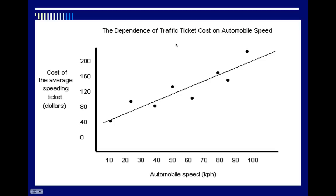Here's an example of a proper title for a graph using independent and dependent variable. So, this one says the dependence of traffic ticket cost on automobile speed. So, this is going to be your dependent variable. This is going to be your independent variable. And as you can see, independent variable is going to be on the x-axis. Dependent variable is going on the y-axis. So, as the automobile speed goes up, the cost of the average speeding ticket also increases. Again,